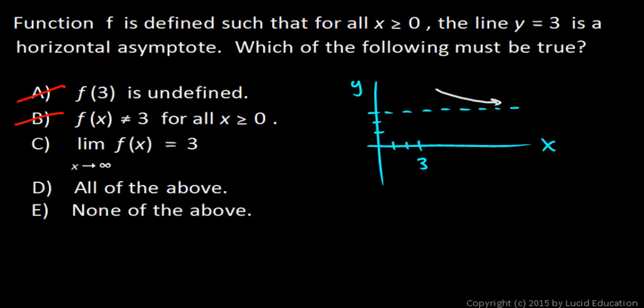which means that at some point way out here, we could keep our y value sufficiently close to 3 by keeping our x value sufficiently large. So choice C is correct.